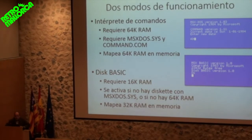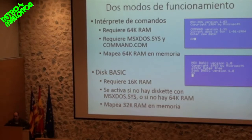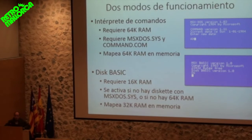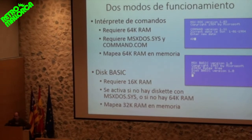MSX-DOS had two operating modes. The command interpreter mode, which is just like the MS-DOS command interpreter everyone knows — this mode required 64KB of RAM and mapped all 64KB into memory when loaded, and required the two system files on a diskette. If there wasn't 64KB of memory, or if there was no diskette with the boot files, it would activate Disk Basic mode — simply the regular BASIC with extended commands to use the disk minimally. In this mode, 32KB of RAM were mapped in the upper part of the Z80 address space.